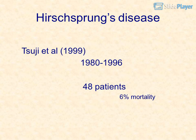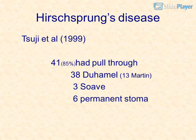Tsuji et al., 1999: 1980–1996, 48 patients, 6% mortality. 41–85% had poor outcomes through follow-up. Operations: 38 Duhamel, 13 Martin, 3 Soave, 6 permanent stoma.